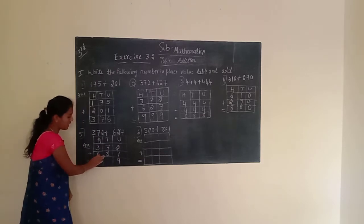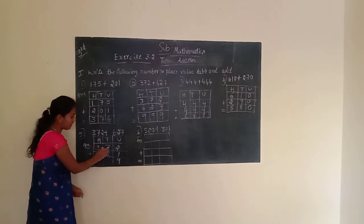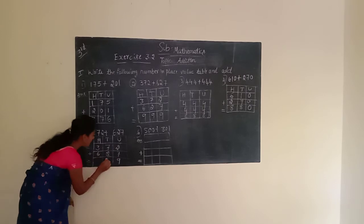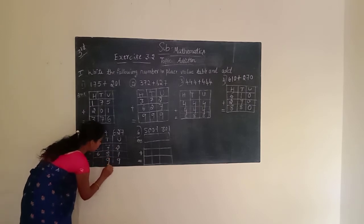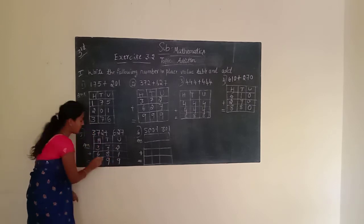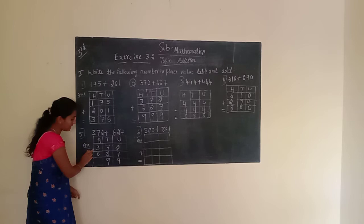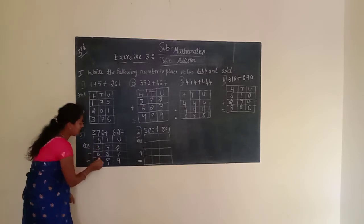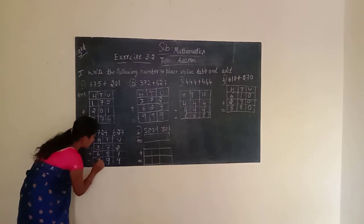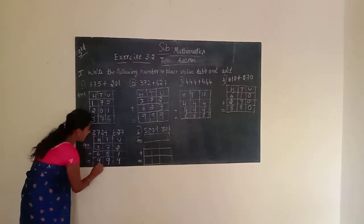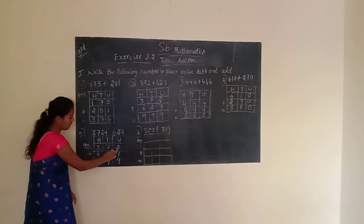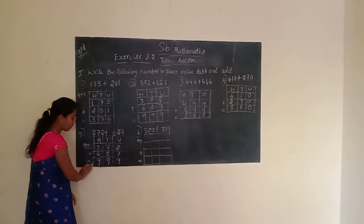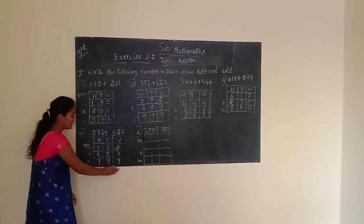Next, move to the tens place. Tens place is having 7 and 2. 7 plus 2 is 9. We have to write 9. Next, move to the hundreds place. Hundreds place is having 3 and 6. 3 plus 6 is 9. We have to write 9. Given number is 372 plus 627 equals 999.